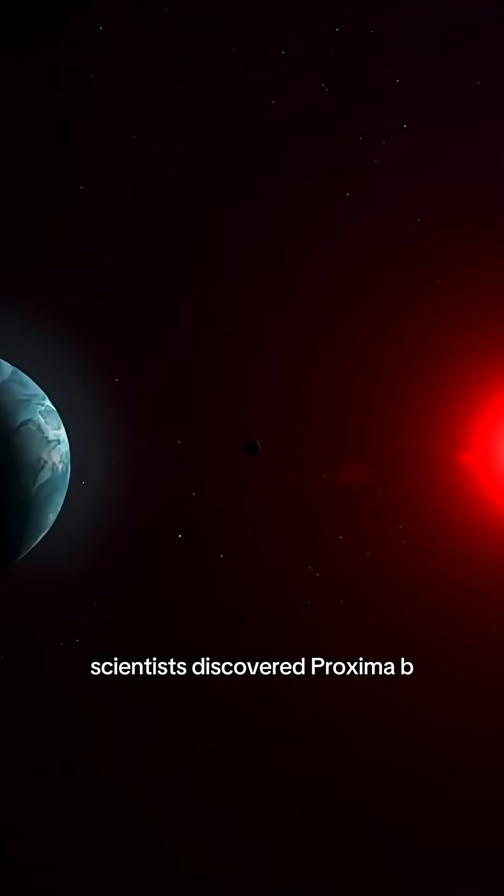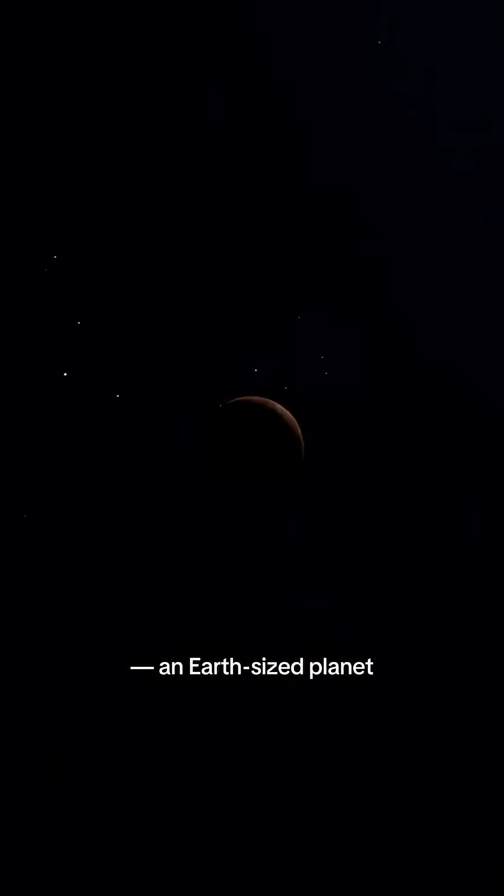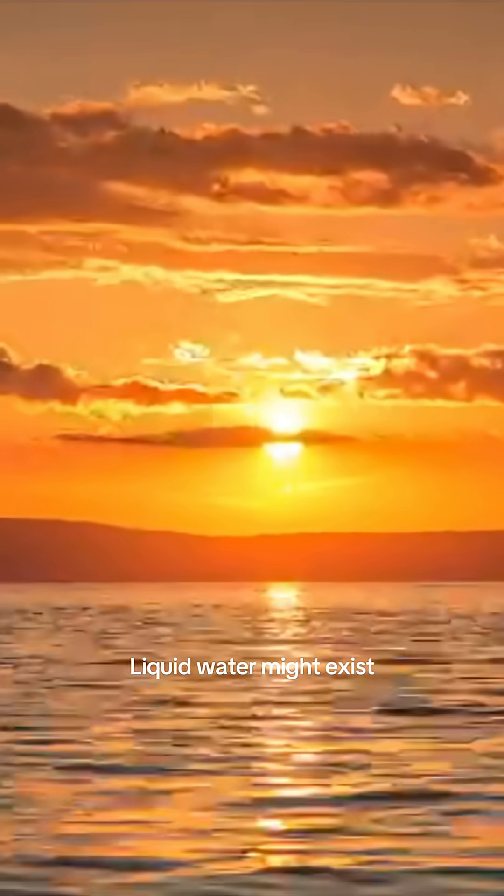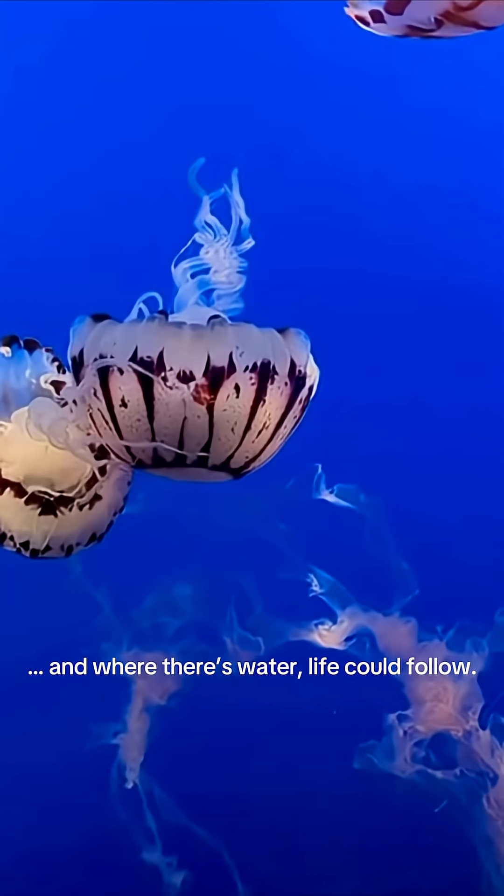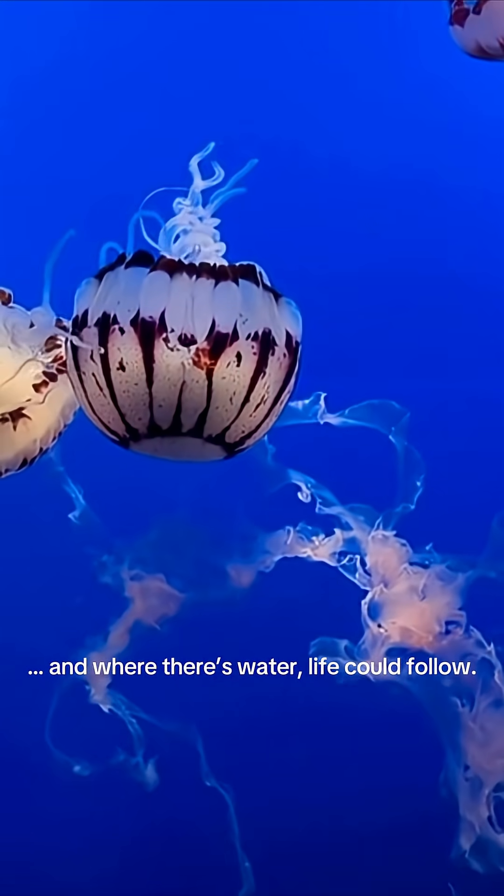scientists discovered Proxima B, an Earth-sized planet in the habitable zone. Liquid water might exist, and where there's water, life could follow.